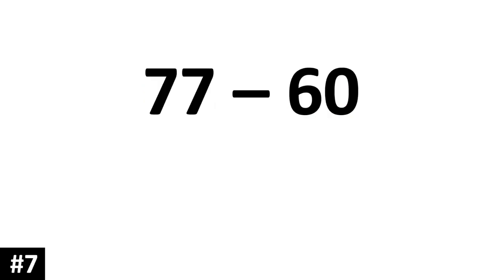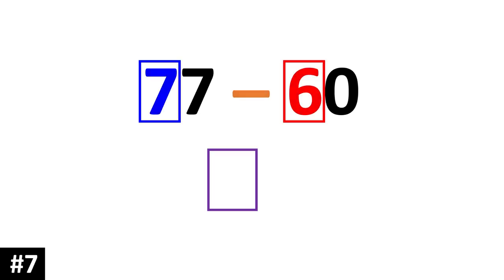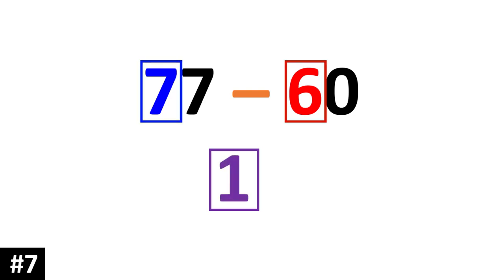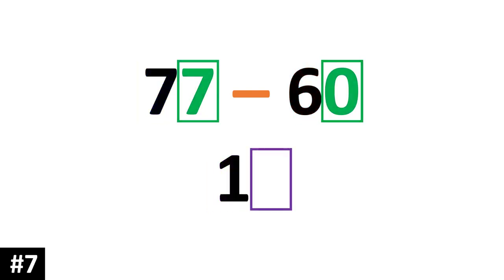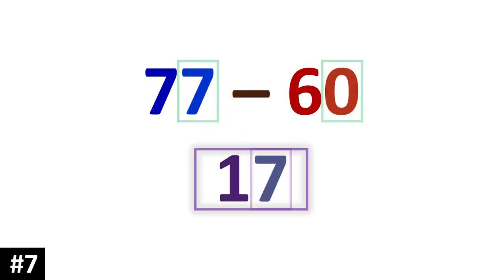How about 77 minus 60? That is 7 10s minus 6 10s, which is equal to 1 10. We look to the ones: 7 minus 0 is 7. So our answer is 17.